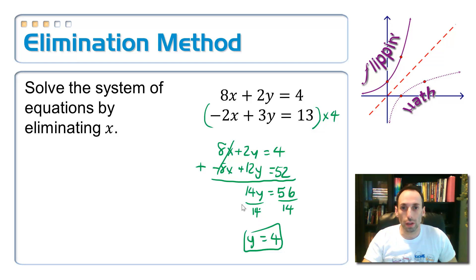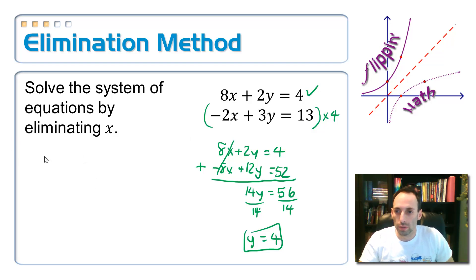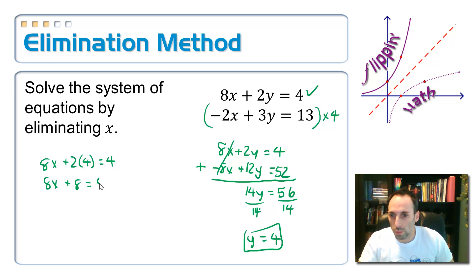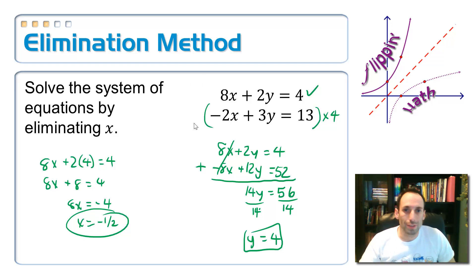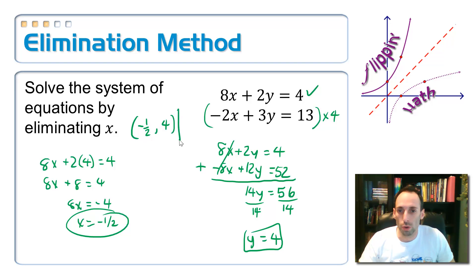Let's solve for x. I'll put it in the top equation: 8x plus 2 times 4 equals 4. That gives 8x plus 8 equals 4. Subtract it over: 8x equals negative 4, so x equals negative 1/2. It's got a funny feel when I came out with a number like that, but it was right. So negative 1/2, comma 4 is our point of intersection.